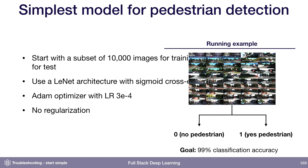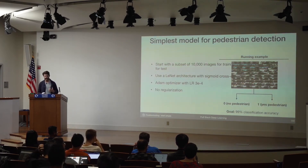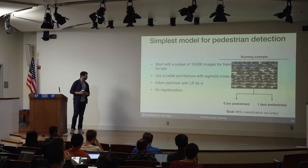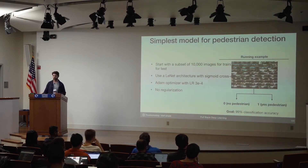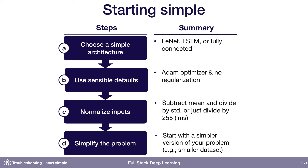Coming back to our running example: what's the simplest model we might choose for pedestrian detection? We're a self-driving car company with millions of images, but we might start with a subset of 10,000. We could use a LeNet architecture with sigmoid cross-entropy loss, Adam optimizer, and no regularization. To summarize, starting simple means choosing a simple architecture, using sensible defaults, normalizing your inputs, and possibly working on a simpler version of your problem to start.